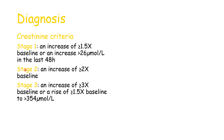Stage two would be an increase of two times or more the baseline. Stage three is an increase of three times or more the baseline. However, there is a magic number here: 354. Taking Arnold as an example — his baseline was 300. If he has an increase of 1.5 times, which would normally indicate stage one kidney failure, his creatinine would exceed 354. So he would go straight into stage three AKI. Stage three AKI is an increase of three times the baseline, or a rise of 1.5 times the baseline to any number above 354.